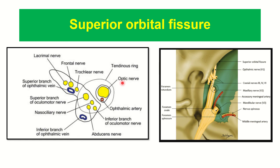Here we can see the superior orbital fissure, which is present just below the lesser wing of the sphenoid bone. The structures that pass through the superior orbital fissure include the ophthalmic nerve, and cranial nerves 3, 4, and 6 — that is, the oculomotor nerve, the trochlear nerve, and the abducent nerve. Cranial nerve 5 has three branches — ophthalmic, maxillary, and mandibular — and only the first branch, the ophthalmic nerve, passes through the superior orbital fissure.